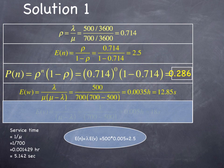The expected wait time of vehicles, lambda over mu times mu minus lambda, or 500 over 700 times 700 minus 500, is 12.85 seconds.